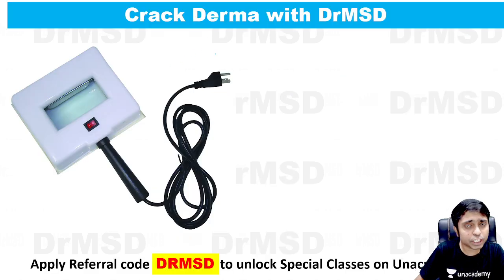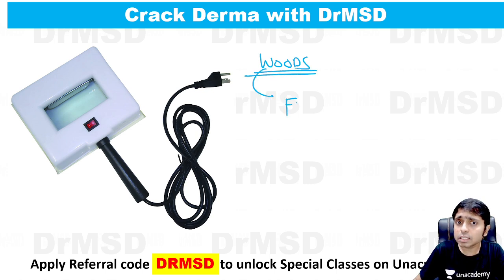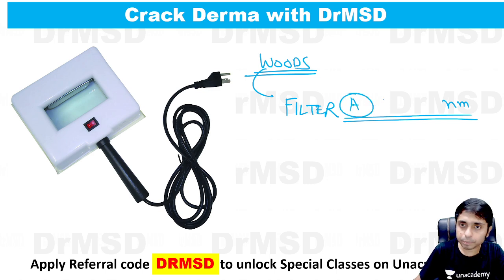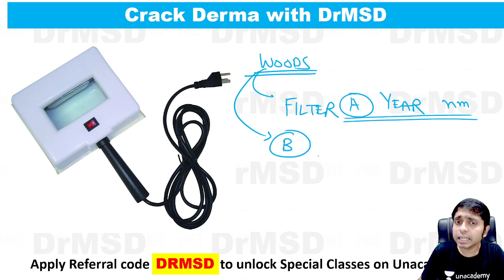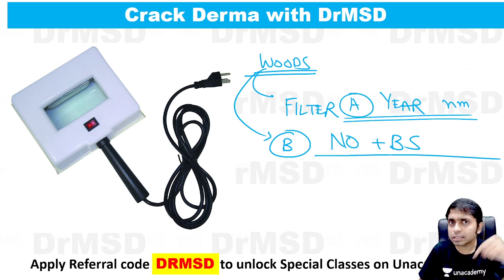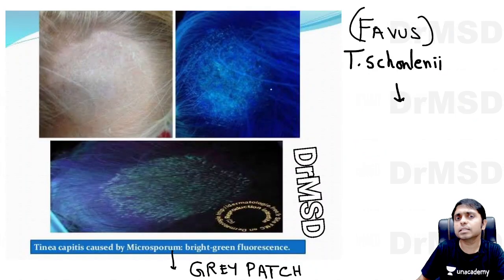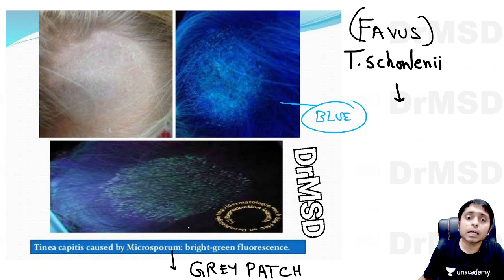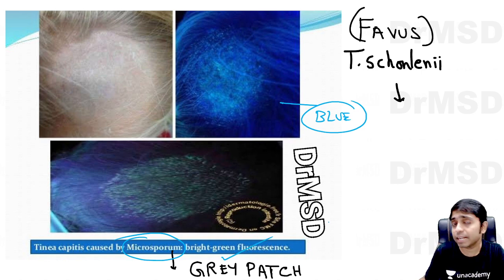The Wood's lamp, mentioned in this question, is a handheld device that filters out all wavelengths and allows only a particular wavelength to pass through. A simple trick to remember that wavelength is the number of days in a year — 365 nm. The filter is made up of a combination of substances: nickel oxide (NO) and barium silicate (BS). When you use the Wood's lamp, which emits blue light, in the case of gray patch variety, Microsporum produces certain substances giving a bright green fluorescence.